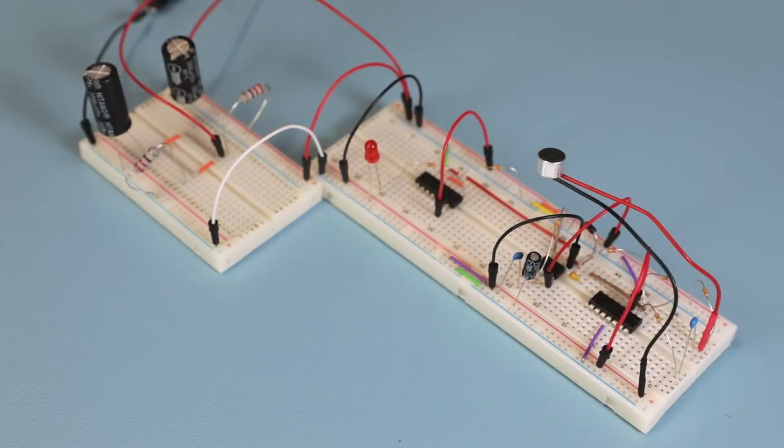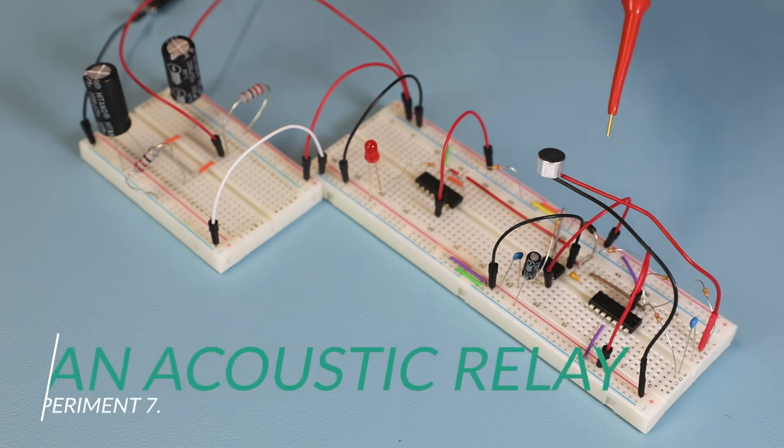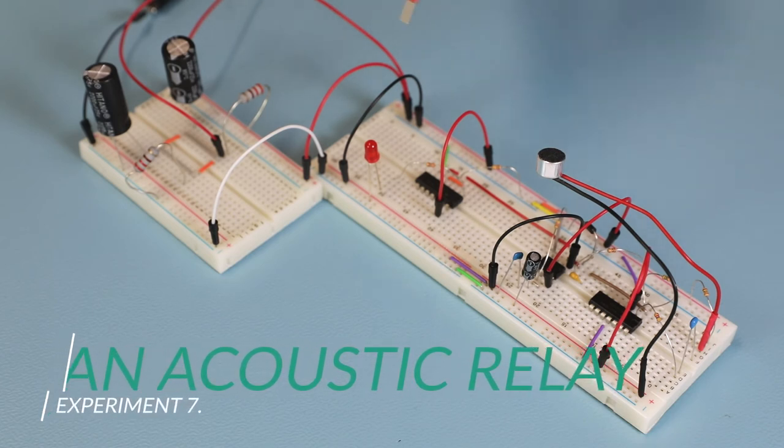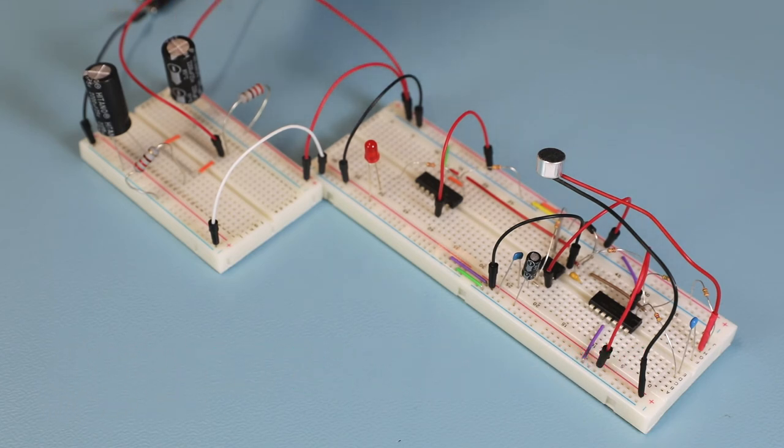A lot of fun in experiment 7. Beside a microphone and different types of capacitors, you will use the bipolar supply from the second experiment to create an acoustic relay or a clap sensor that reacts to sound. Now you can simply switch on the circuit by clapping.